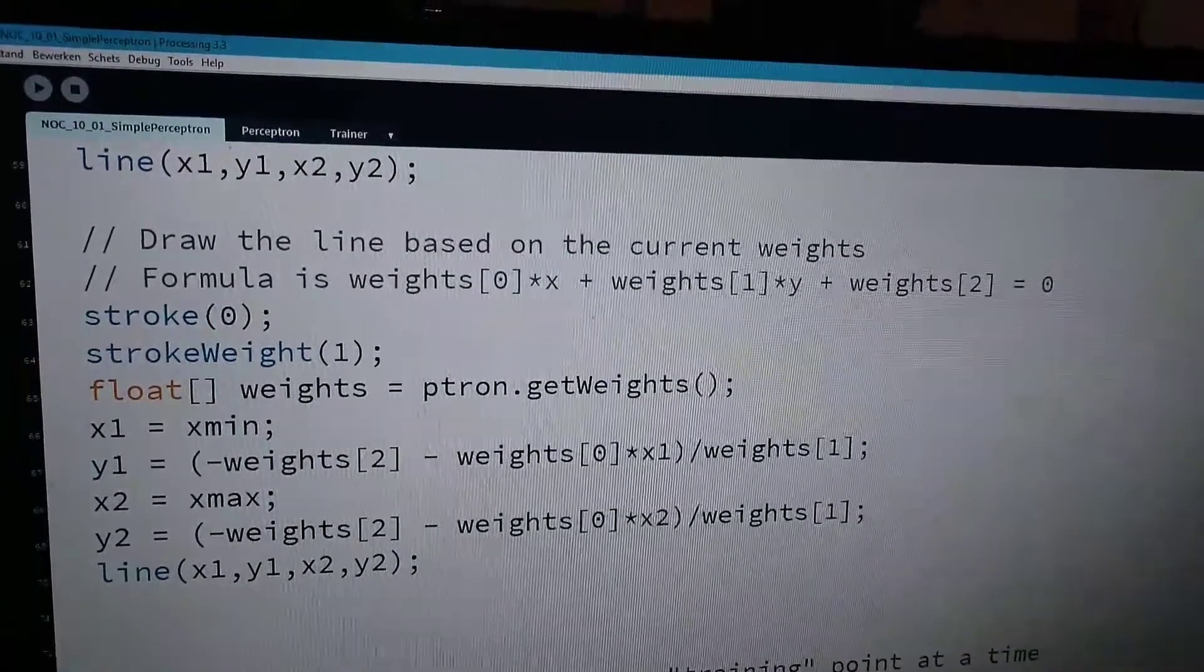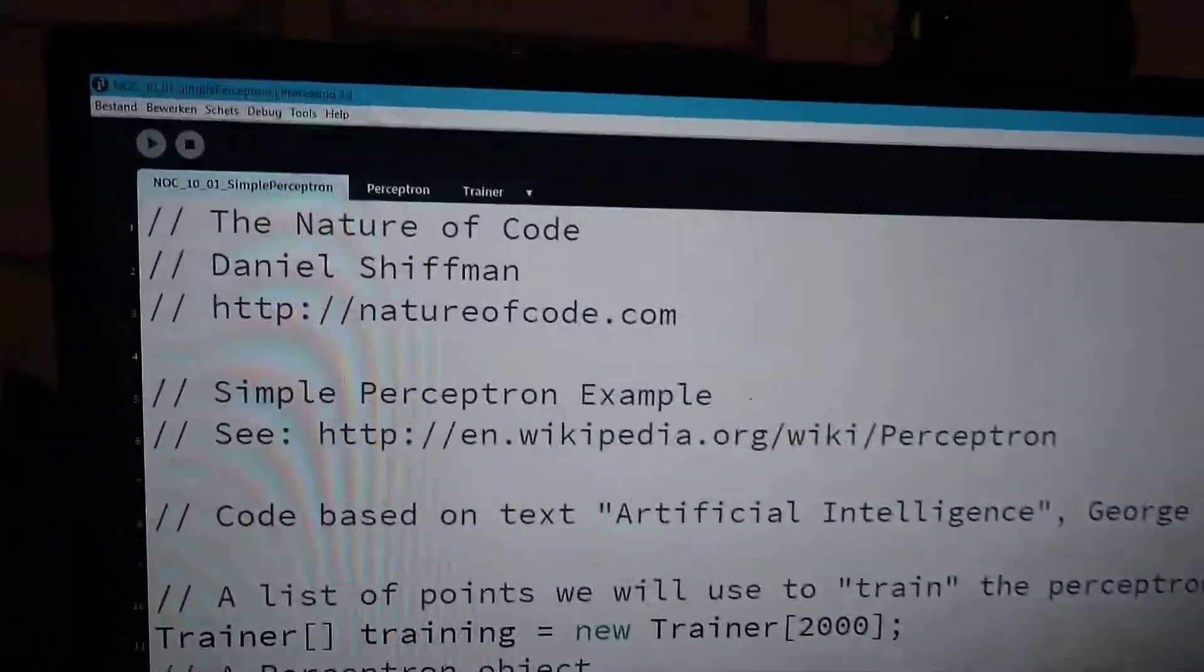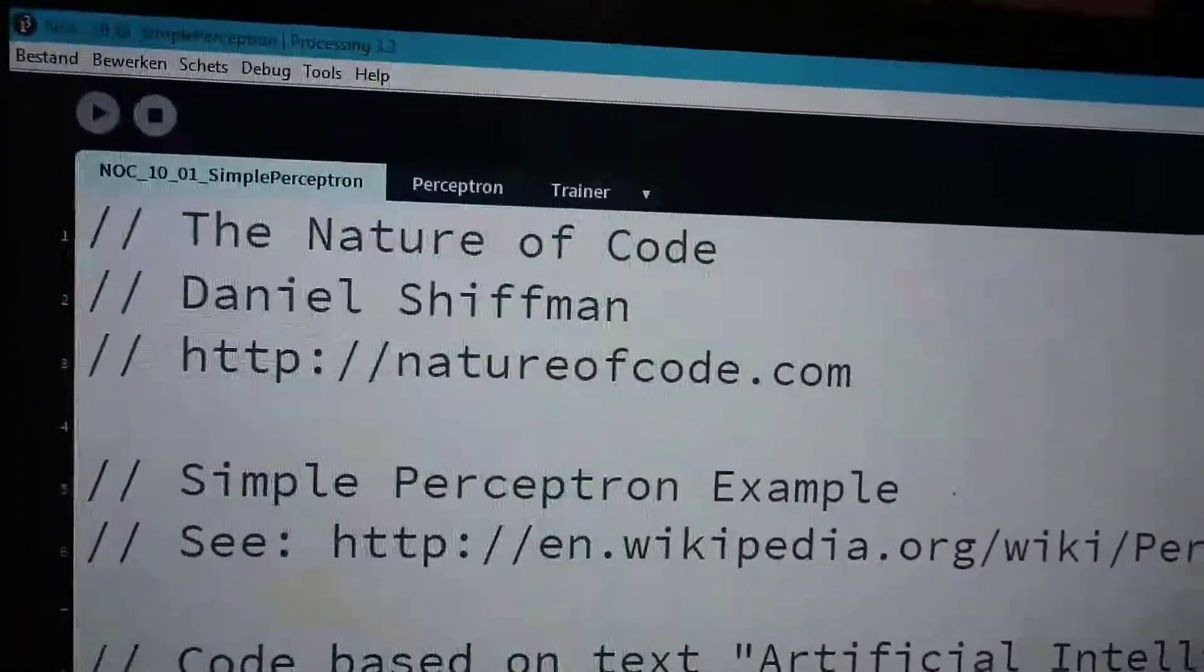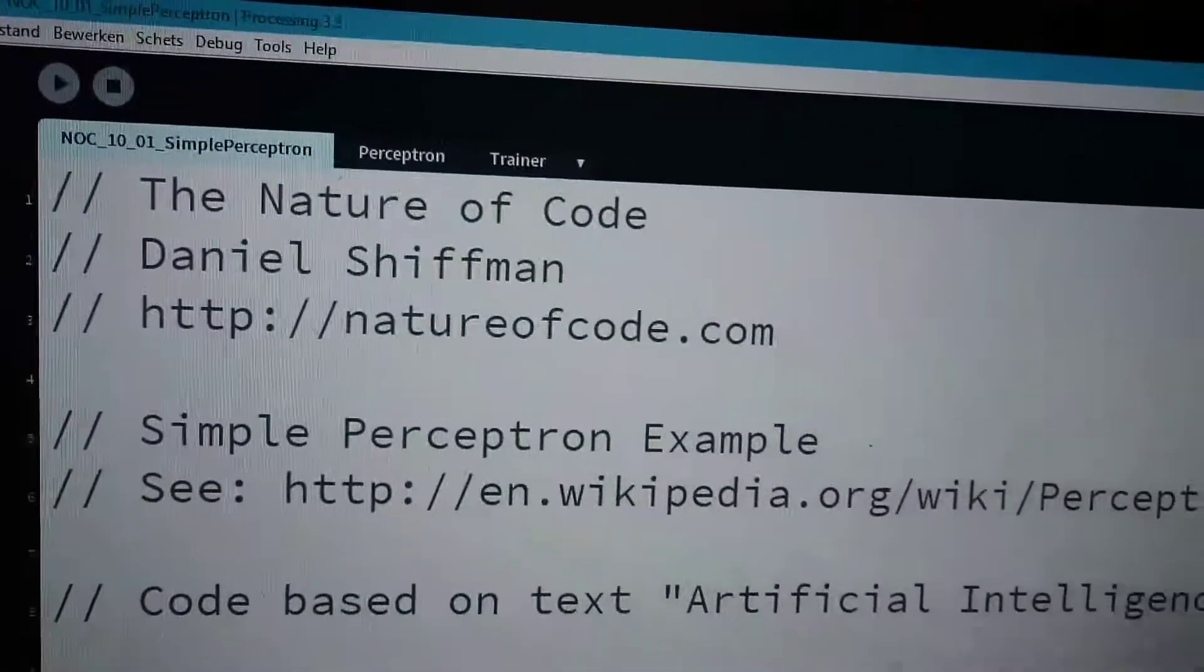But this is processing. I translated. This is from The Nature of Code? Yeah. Chapter 10? Chapter 10 about neural networks, yes.